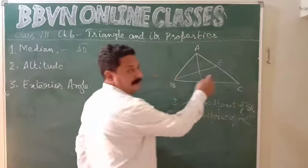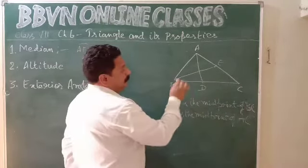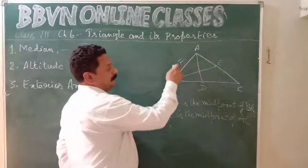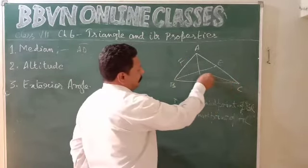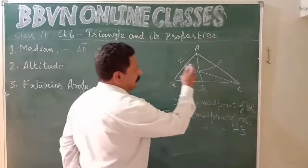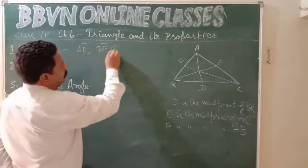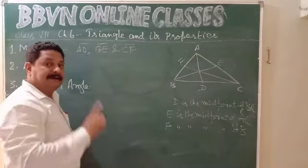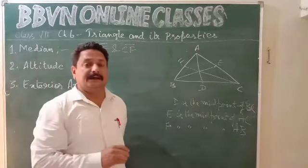From vertex C, I can find the third median. The side opposite to vertex C is AB. Let F be the midpoint of AB, which means length AF equals length BF. Now joining C with F, I get the third median CF. So AD, BE, and CF are the three medians of the triangle. Since a triangle has three vertices, it can have three medians.